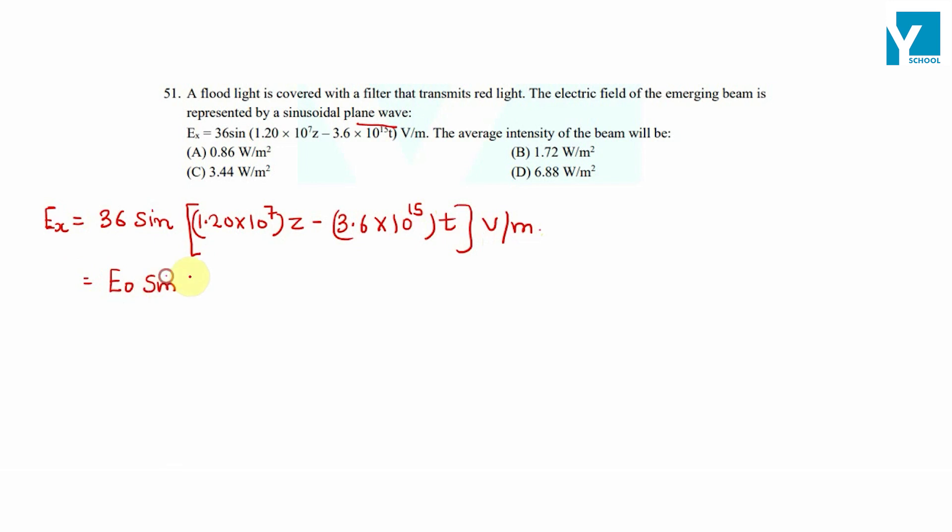Sin(kz - ωt). The amplitude is equal to 36. Wave vector k magnitude is 1.20 × 10^7, and angular frequency ω is 3.6 × 10^15 radians per second.